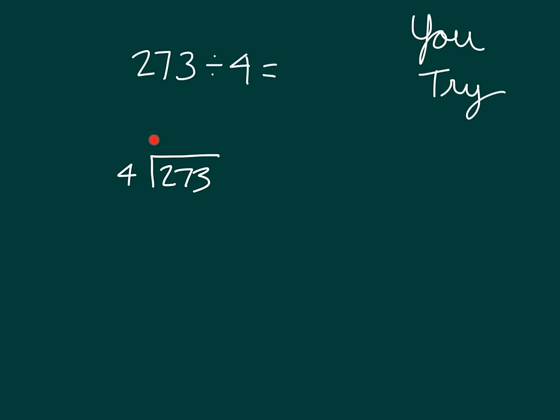4 cannot go into 2, 4 can go into 27. We divide those 27 tens by 4, we get 6. Make sure that you recorded your 6 right in the tens place. We know that 6 times 4 is 24. Therefore, we have 27 minus 24, which is 3, and we can bring down the other 3 so that we have 33 ones.